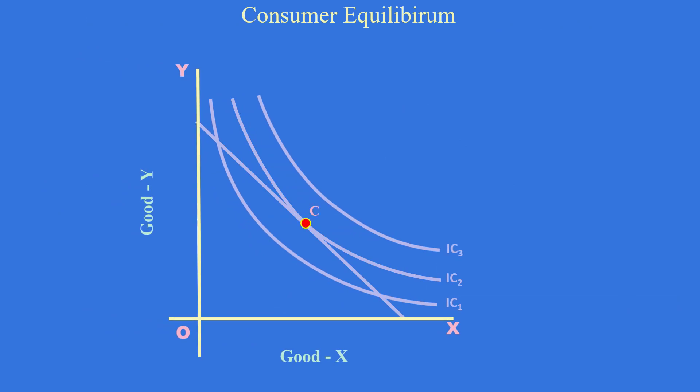At point C, the indifference curve IC2 is tangential to the price line Lm. Given the prices of two goods and income of the consumer, IC2 is the highest possible indifference curve the consumer can reach.